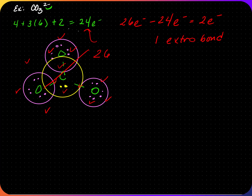So we're going to redraw the structure. Carbon again has to be in the middle because it's the least electronegative. Since they're all oxygens, I'm going to put a double bond on only one of the oxygens. Remember, we only need one extra bond. We all started with single bonds, so if there's one extra bond, it has to go to one of the oxygens — just pick one.